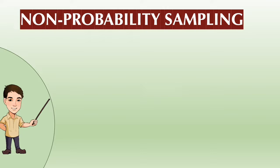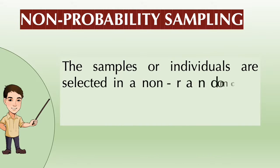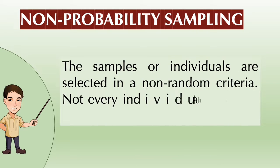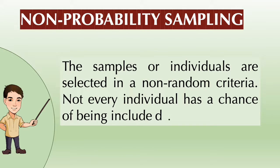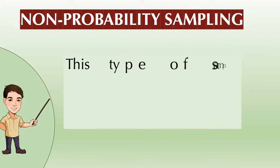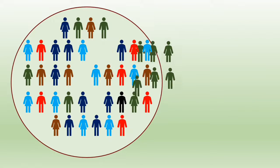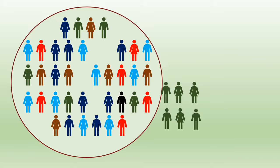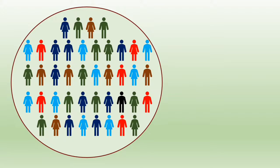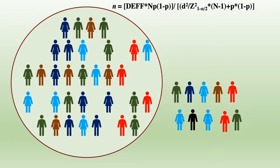Let us first define what non-probability sampling is. In non-probability sampling, the samples or individuals are selected using non-random criteria, meaning not every individual has a chance to be part of the study. This type of sampling technique is often used in exploratory and qualitative research. In qualitative research, a relatively lesser number of samples is selected compared to quantitative research, which follows a formula to compute the desired sample size.